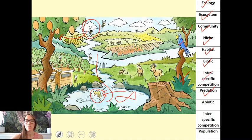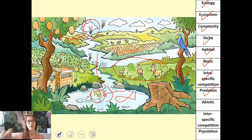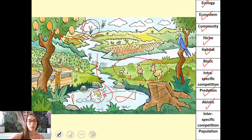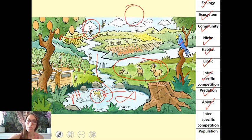Intraspecific competition is competition between organisms within the same species. For example, these goats are the same species and are located in the same field, so they're probably competing for the same food. Abiotic factors — things like the pH of the water here would influence that aquatic ecosystem, and the light available to this ecosystem would be another example of an abiotic factor.